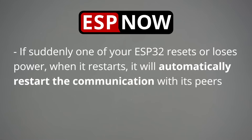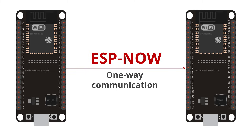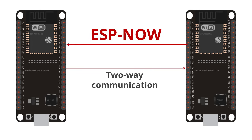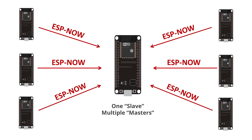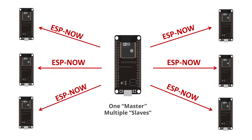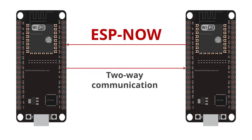ESPNOW is very versatile, and you can have one-way or two-way communication in different setups. For example, you can have one board sending data to another board, one board receiving data from multiple boards, and one board sending data to multiple boards. You can also have a two-way communication between two or more boards.